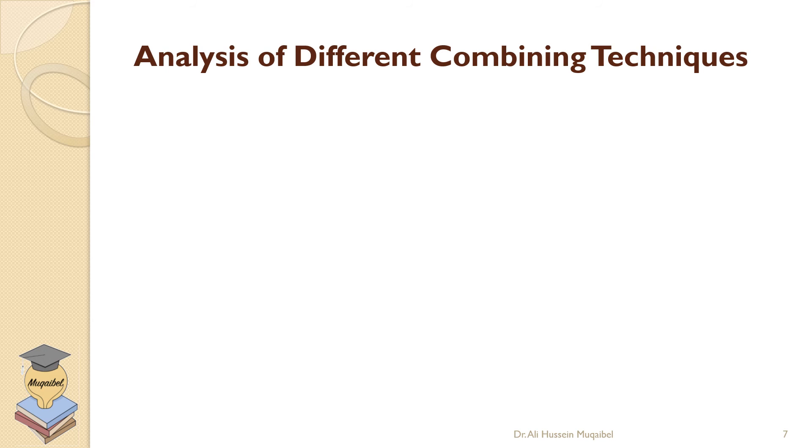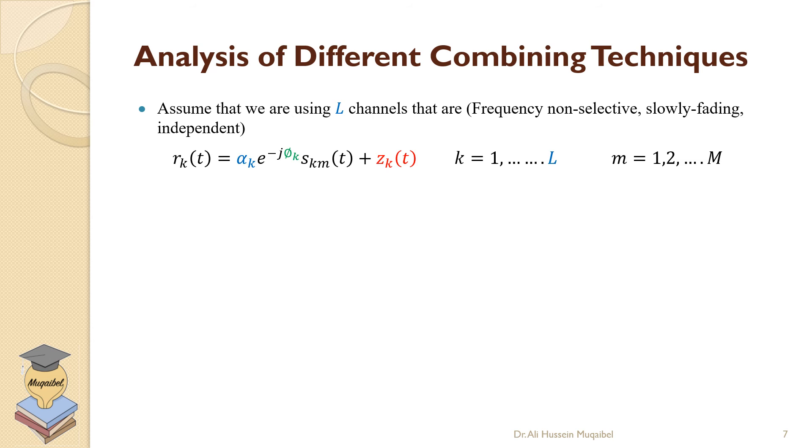Analysis of different combining techniques: we're making the simplest assumption—frequency non-selective, slow fading, and they are independent. The received signal r is the transmitted signal, but because of fading it's going to be scaled and phase shifted. This is a path gain.